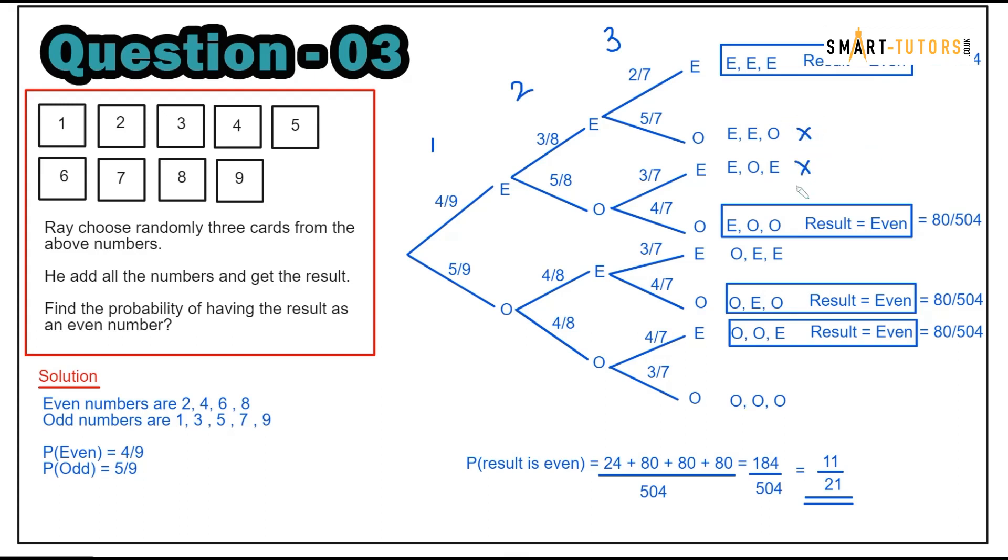Even plus even equals even. Two odd numbers plus one even equals even, so there are four possible options. Multiply everything together: first is 24 over 504, then 80 over 504, 80 over 504, 80 over 504. Add them to get 184 over 504 chance of having an even result. Simplify to 11 over 21.